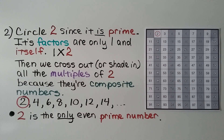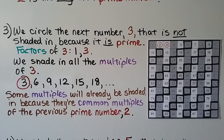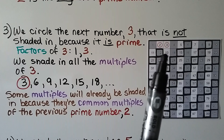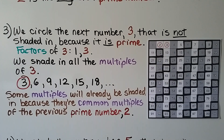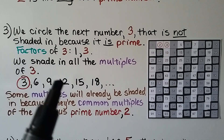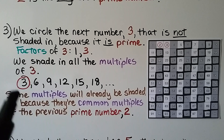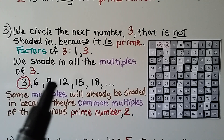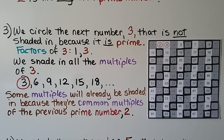2 is the only even prime number. The next step, we circle the next unshaded number, 3, because it is prime. The factors of 3 are 1 and 3, for 1 times 3. We shade in all the multiples of 3: 6, 9, 12, 15, 18. We circle the 3 and then shade in all the other multiples.